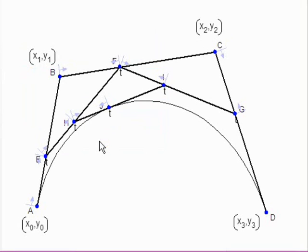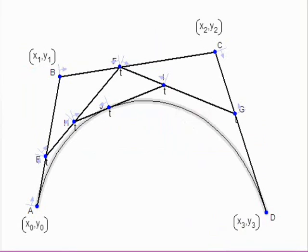I'll create a locus as T varies from 0 to 1. And here I get my curve.